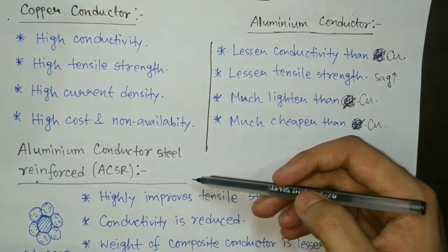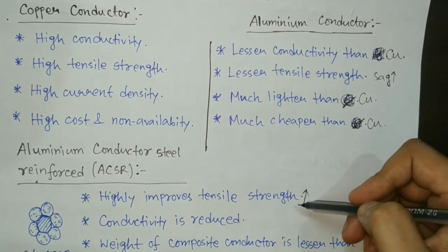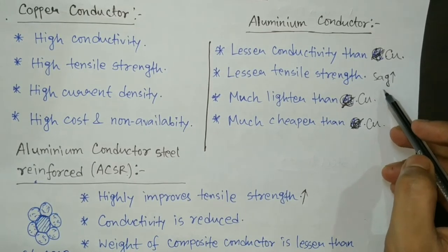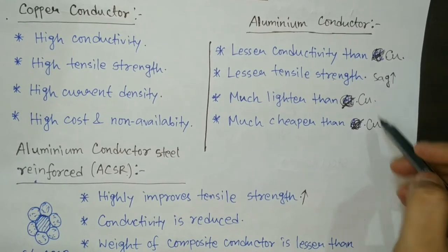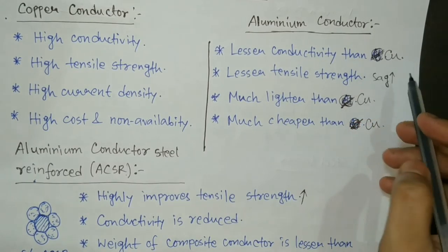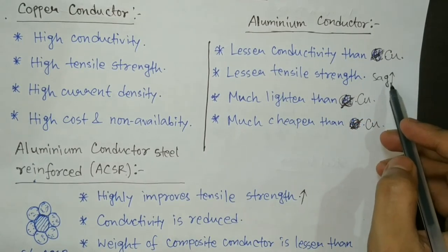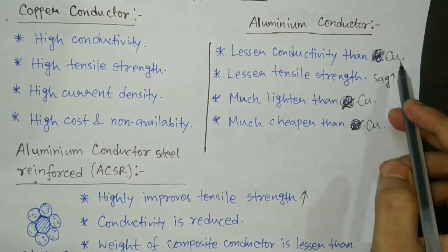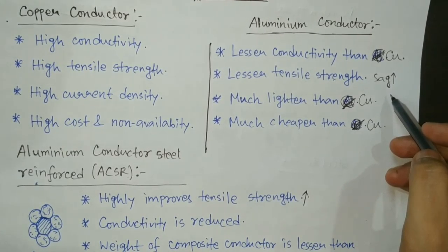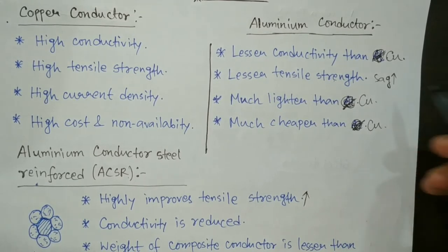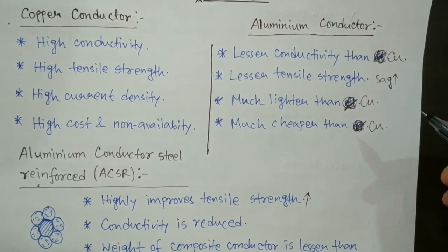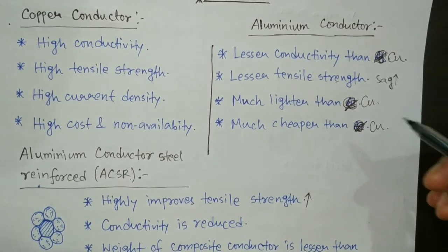ACSR conductors are widely used for long transmission lines. Due to the improvement in tensile strength, the problem of sag is gone. As a result, the height of the tower can be reduced, because previously — with plain aluminium conductor and high sag — the tower needed to be very high to maintain ground clearance. With reduced sag, the tower height doesn't need to be very high, which also reduces the cost of the tower.